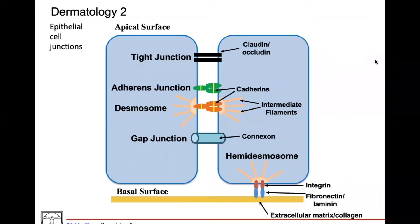Here's an example of the epithelial cell junctions likely to be tested on Step 1. There are four major types. Starting from the apical surface: the tight junction, which makes up the zonula occludens, is composed of claudin and occludin proteins and prevents paracellular movement of solutes between cells. Then there's the adherens junction, which makes up the zonula adherens — it forms a belt between two cells and connects the actin cytoskeletons within the cells to the adherens proteins within the junction itself.